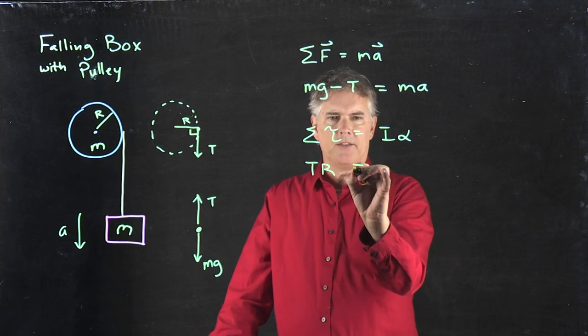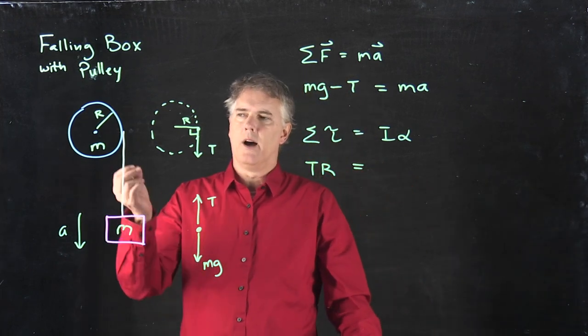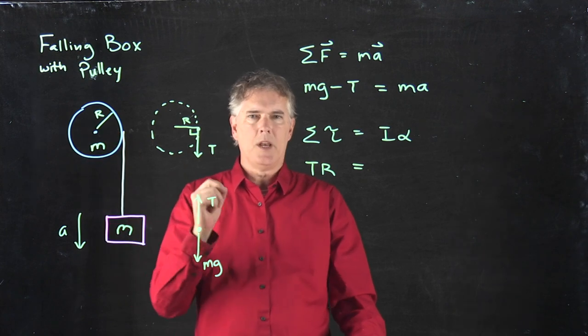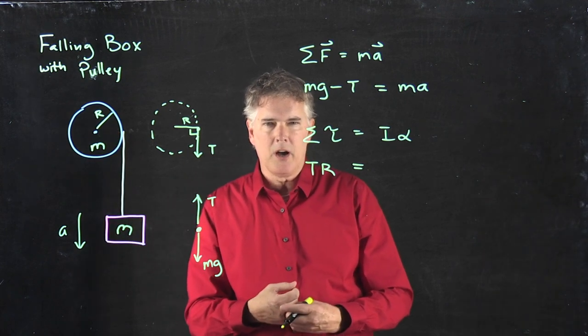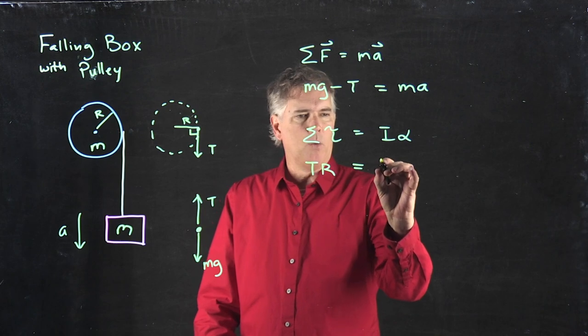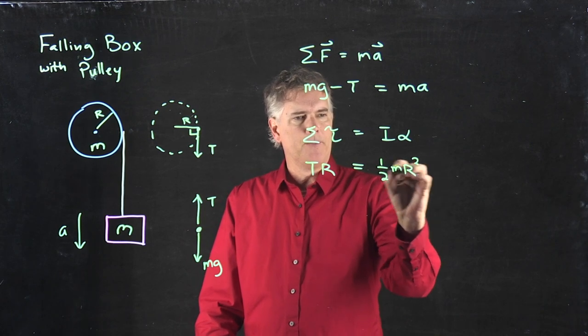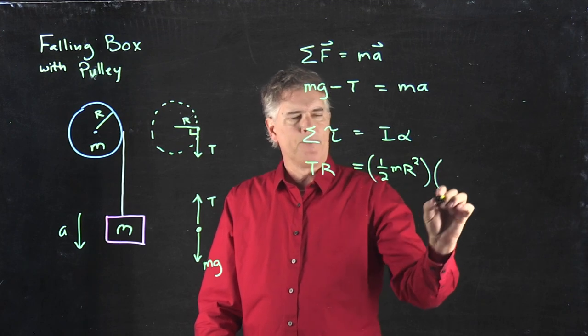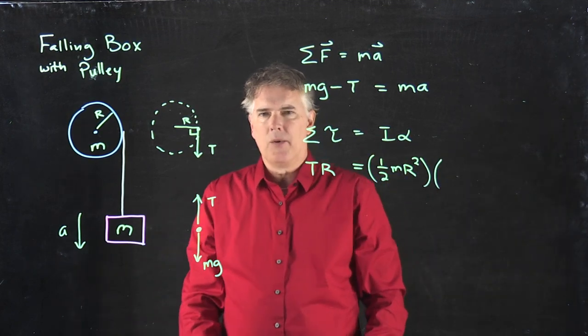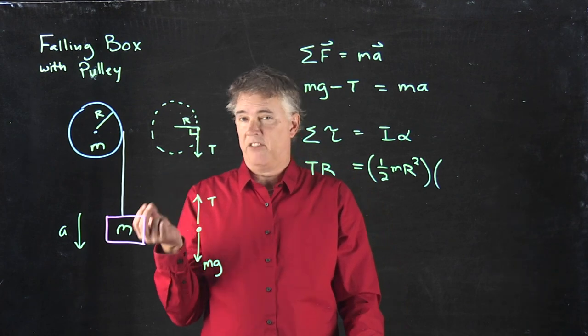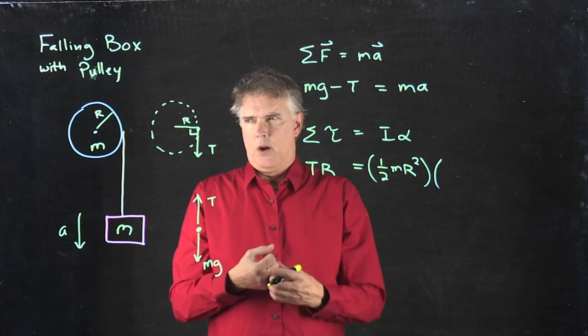The right side of the equation becomes what? Well, it's a disc. We know that the moment of inertia of a disc is one-half mR squared. And now we have this angular acceleration alpha. And we've got to make some sense of that.